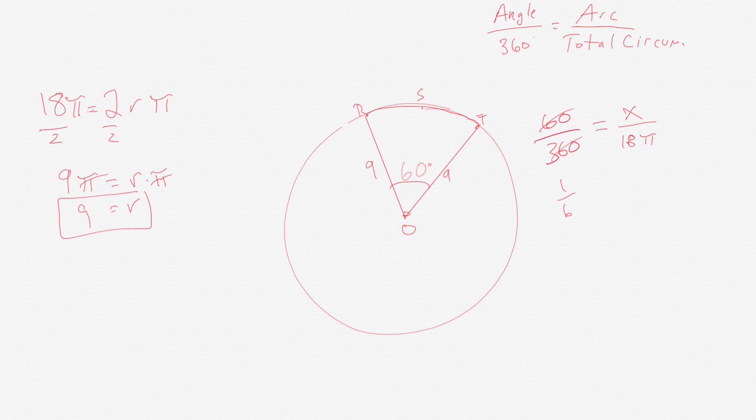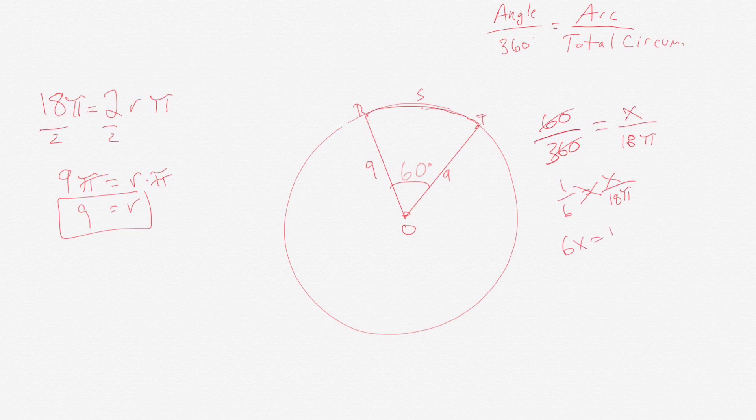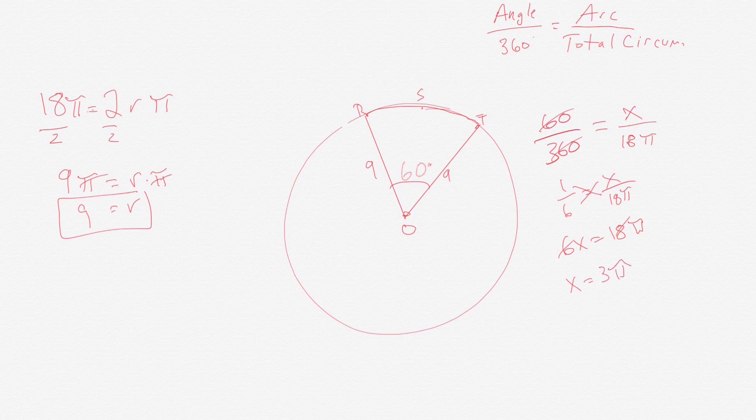60 over 360 can simplify to one-sixth. So we have one-sixth equals x over 18π. We could cross multiply, so we have 6x equals 18π. Then we divide by 6 on each side, we get x equals 3π.